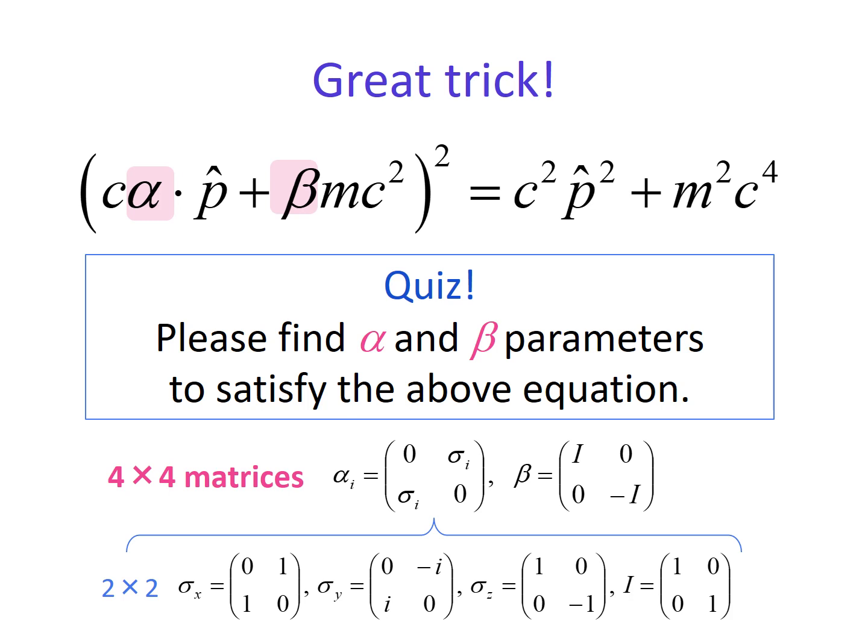This is because, in the case of matrices, alpha times beta and beta times alpha can be different, whereas it is not possible for scalar values. The minimum size of the matrices are four by four. They look like two by two, but this sigma and I are two by two matrices and nested in alpha and beta, so finally they are four by four.